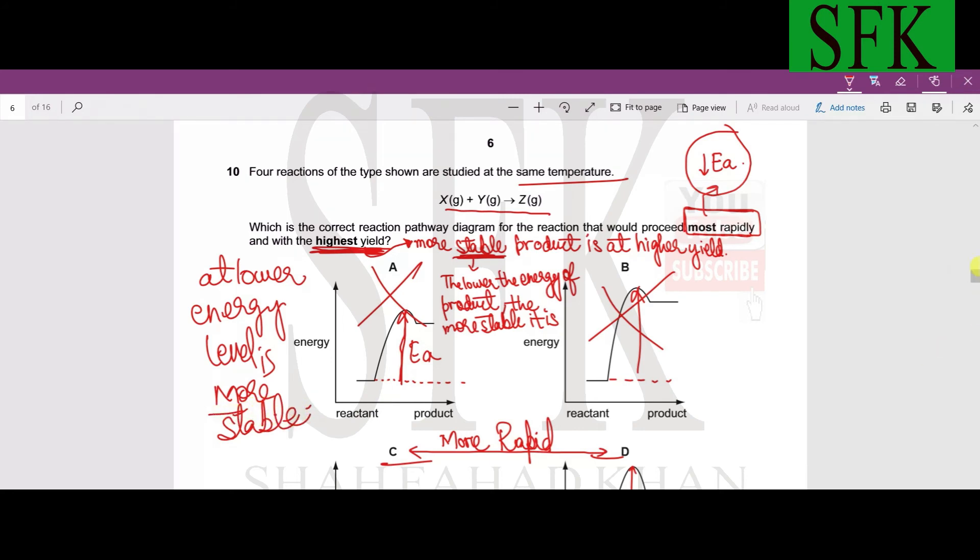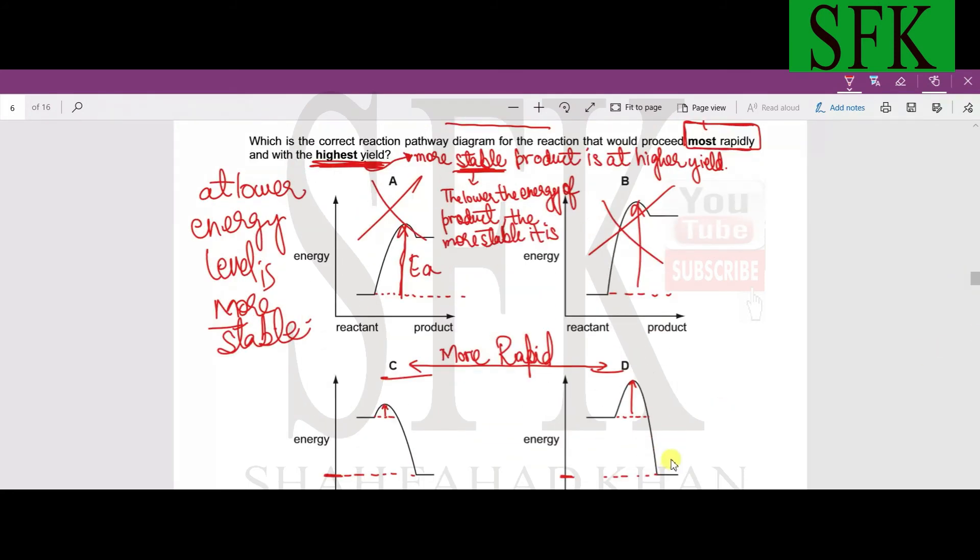So again C and D will have a more stable product as compared to A and B, so A and B cannot be the answer options. Now there comes a tie between C and D, which one will be the better answer option? Since their products are at the same energy levels, their products are gonna have the same stability. If you put a ruler over here, they are actually at the same energy level.